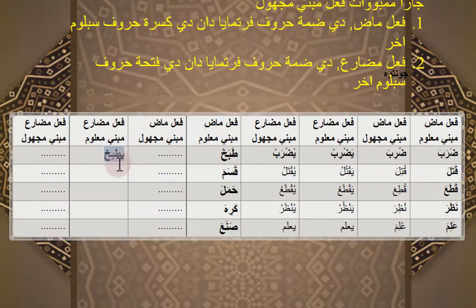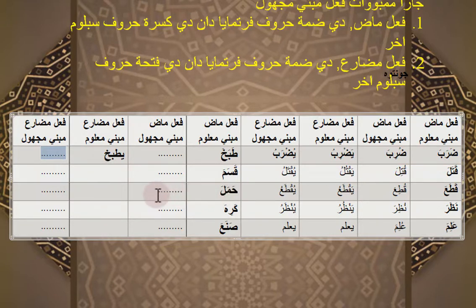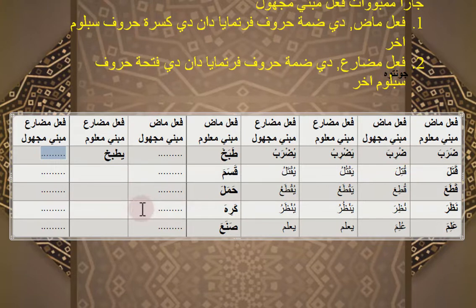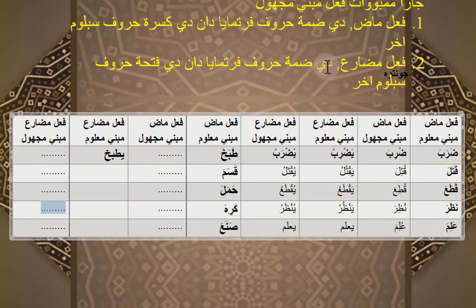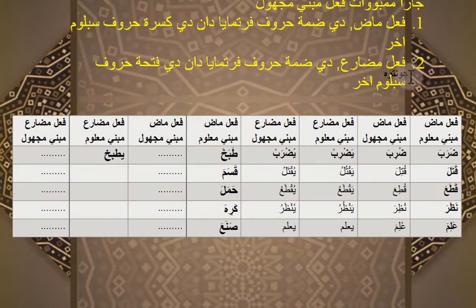Kemudian Kosama, fi'il mudhare-nya mabni maklum itu apa? Setelah menjadi mabni maklum, kemudian coba jadikan fi'il mudhare yang mabni majul. Hamalah maklum, kemudian majulnya seperti apa? Fi'il mudhare mabni maklumnya bagaimana? Kalau sudah ketemu fi'il mudhare mabni maklum, kemudian fi'il mudhare mabni majulnya seperti apa? Begitu juga lafal Kariha mabni majulnya seperti apa, kemudian fi'il mudhare mabni maklumnya, lalu dijadikan fi'il mudhare mabni majul. Kaedahnya: kalau fi'il mazi, di-dhammah huruf pertamanya dan di-kasrah huruf sebelum akhir. Kalau fi'il mudhare, di-dhammah huruf pertamanya dan di-fathah huruf sebelum akhir. Hanya soal mengubah harakat saja, tidak terlalu sulit.